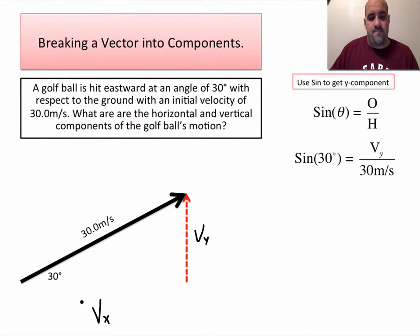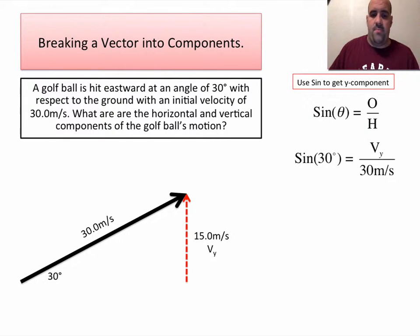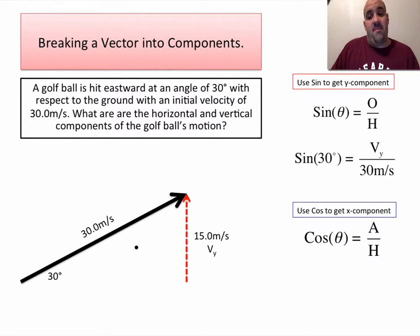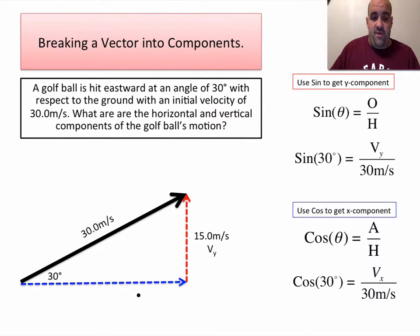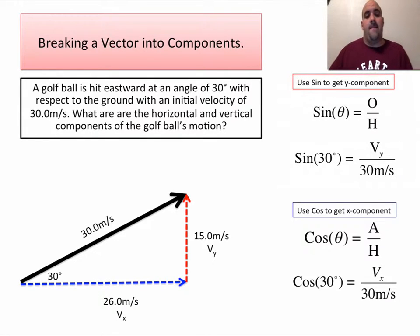Down here we'll have velocity in the x. To get the velocity in the y: sine of 30 equals that, so 30 times the sine of 30 gives the velocity in just the y direction. We do the same thing for x, but since the x component is the adjacent side, we can't use sine — we use cosine, because cosine is the adjacent side divided by the hypotenuse. So cosine of 30 equals velocity in just the x direction divided by the hypotenuse. That gives us 30 times cosine of 30, which equals 26 meters per second.